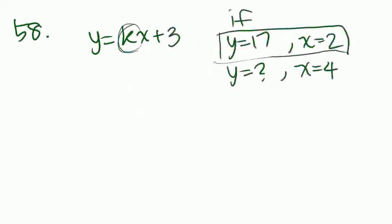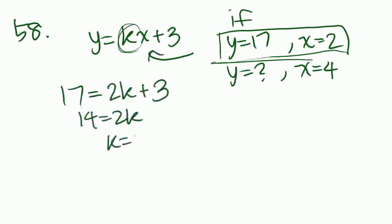17 equals 2k plus 3. 14 equals 2k. k equals 7. So we know k equals 7. Let's plug that back into the equation. Now that we don't have a k there, we get y equals 7x plus 3.